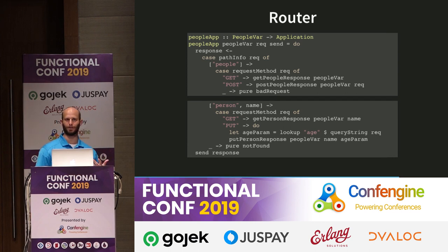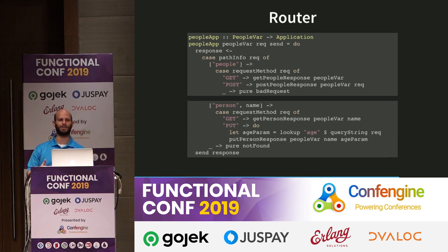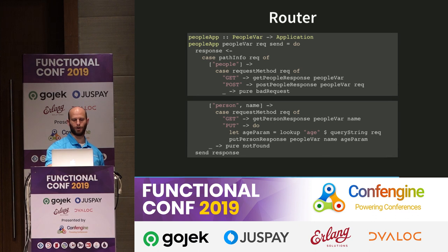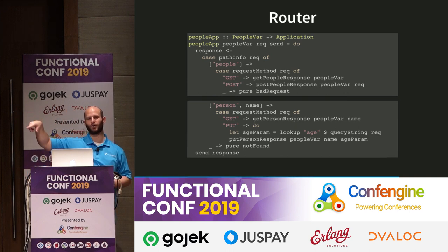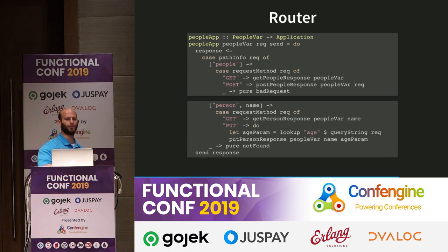Our router dispatches based on path info. My peopleApp function takes a PeopleVar and returns an Application. This is an important aspect: Haskell is all about functions and closures and capturing variables. We create this variable in our main function, and the application is predicated on having it available — you pass it in as a function parameter rather than using a mutable global. We pattern match on the path info: for ["people"], we pattern match on the request method — GET uses getPeopleResponse, POST uses postPeopleResponse. For ["person", name], we capture the name variable and pattern match on GET and PUT. If neither route matches, we return not-found, and at the end we send the response.